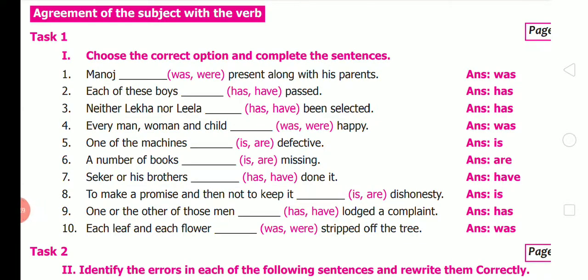Turn to page 187 for subject-verb agreement, that is concord — Task 1. Choose the correct option: 1) Manoj was present along with his friends — singular verb 'was.' 2) Each of these boys has passed. 3) Neither Leka nor Leela has been selected. 4) Every man, woman and child was happy. 5) One of the machines is defective. 6) A number of books are missing. 7) Shagar or his brothers have done it. 8) To make a promise and then not to keep it is dishonesty. 9) One or the other of those men has lodged a complaint.